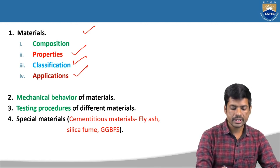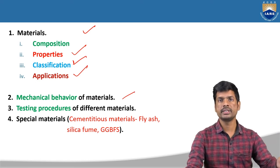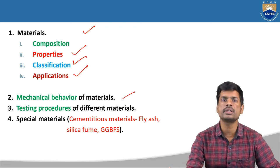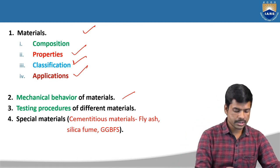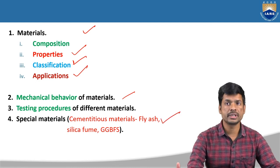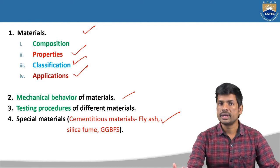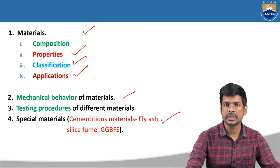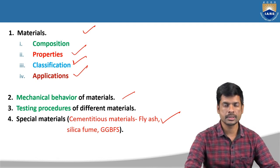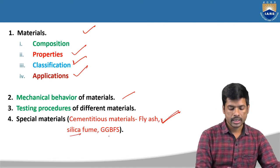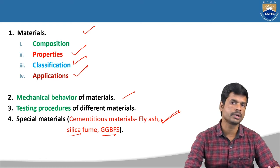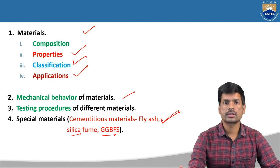The second factor is the mechanical behavior of materials. We are going to learn about mechanical properties of some materials, mainly focusing on metals like mild steel. Next, special materials — cementitious materials, which are materials having the same properties as cement. Examples of cementitious materials include fly ash, silica fume, and GGBS. Along with this, we are going to learn about composites. This is the outline and syllabus covered in this particular subject.